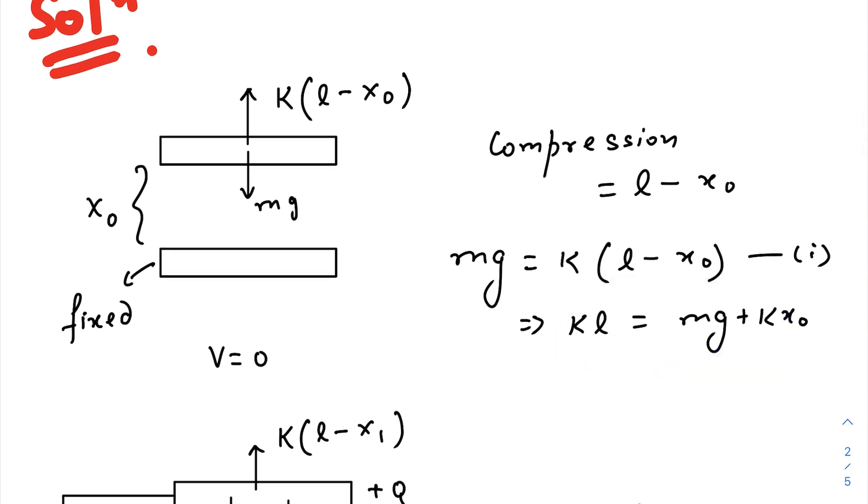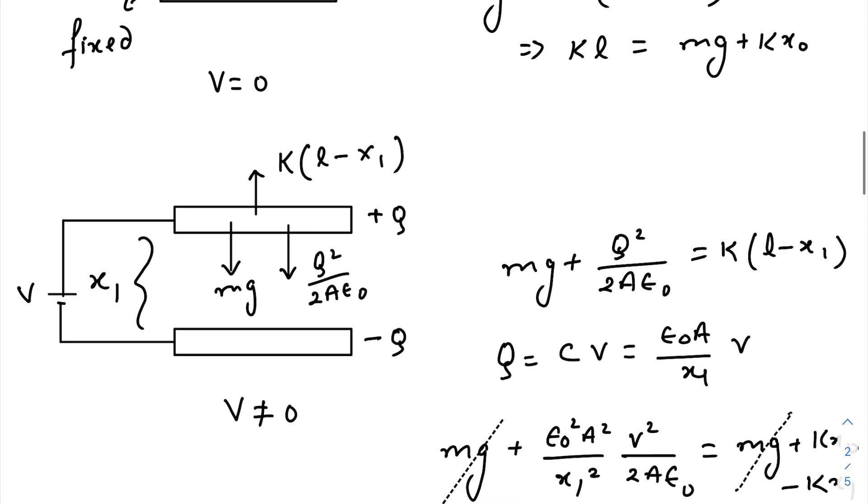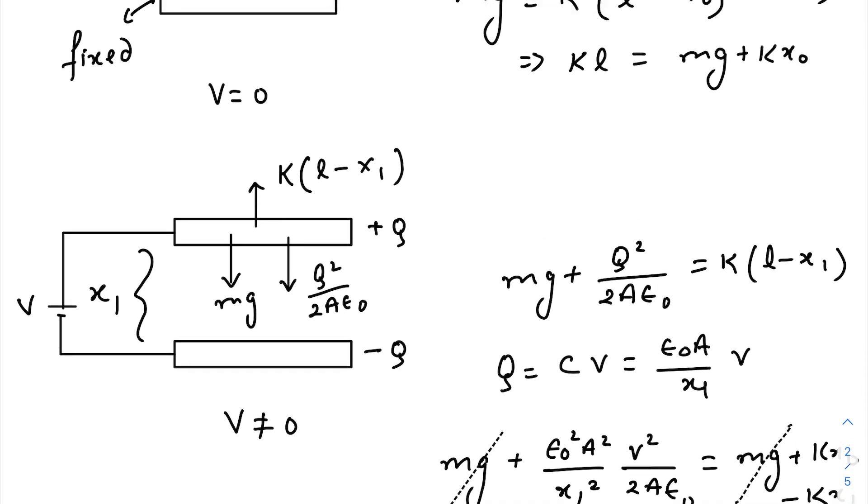When the voltage is applied, what happens is there will be some charge, positive charge q and negative charge q here. Due to these two opposite and equal charges, there will be a force on the upper plate and that force is q squared by 2 epsilon naught, standard formula.